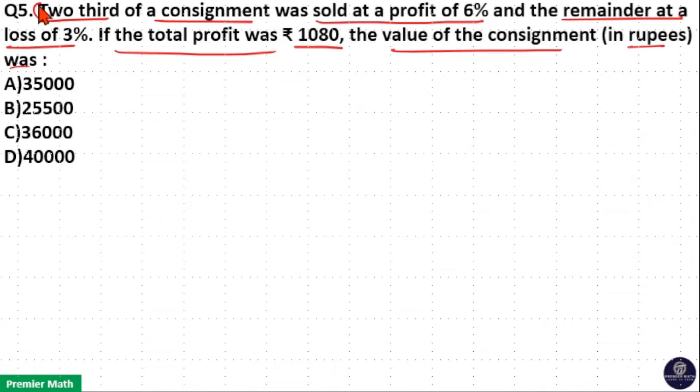Here, two-third of a consignment reflecting the total number of consignment. Consider 3 units as the total number of consignment. Then, out of this 3 units, 2 units sold at a profit of 6%.